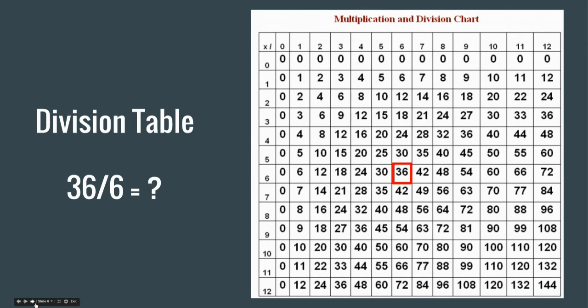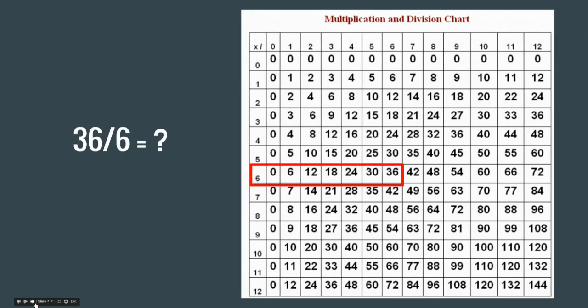And then we're going to divide by 6. So that means, okay, let's find the 6 and draw a line. And then we're going to start at 36 and draw another line up and find, oh, we stopped at this 6 along the first row. So that means that 36 divided by 6 is also 6.